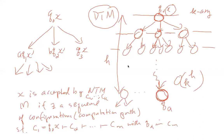Non-deterministic Turing machines are a convenient way to classify problems. Later, when we study time complexity, we will encounter the concept of non-deterministic polynomial time (NP) and deterministic polynomial time (P). Whether P equals NP is a long-standing open problem that we'll return to later.